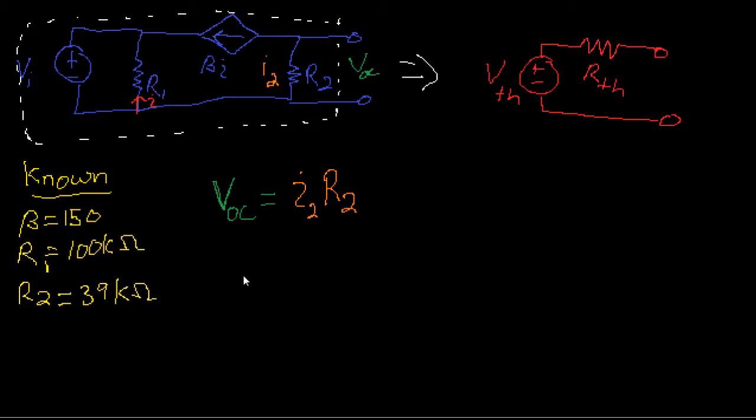Next, what is i2? Well, if we look at i2, it's a current coming up this way. And because this is an open circuit here, i2 is going to be exactly the current that's in this branch, which is beta i. So we can rewrite this substituting i2 for beta i. We'll have beta i times R2 as our VOC, our open circuit voltage.